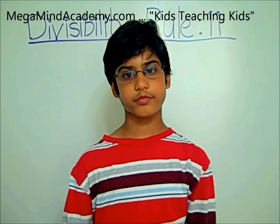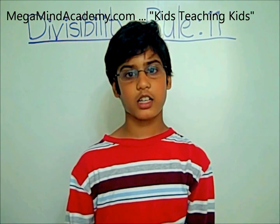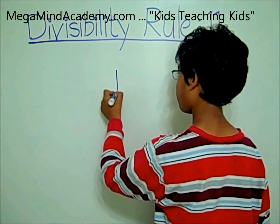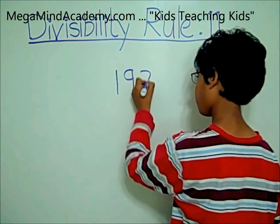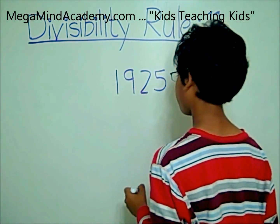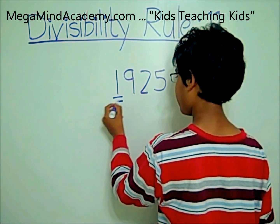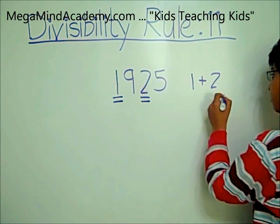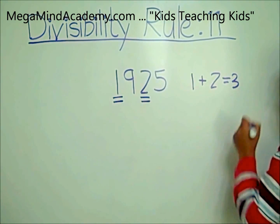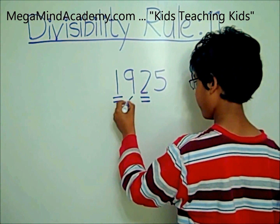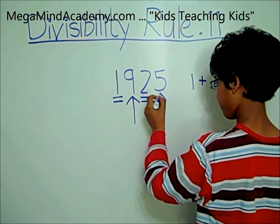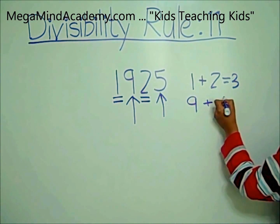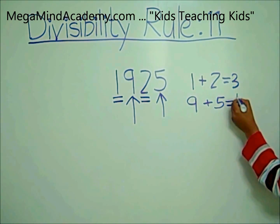Let's look at an example. Let's say your number is 1,925. 1 and 2 are the alternate digits, so we have to add 1 plus 2 which equals 3. Now, the other alternate digits are 9 and 5, so we have to add 9 plus 5 which equals 14.